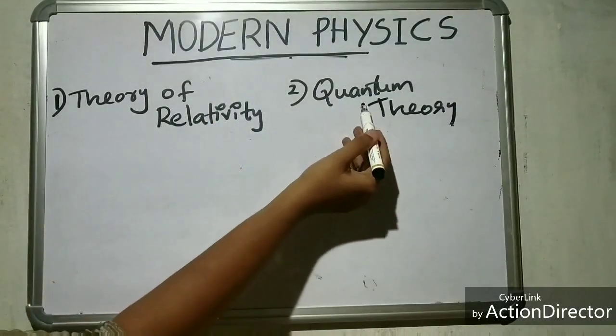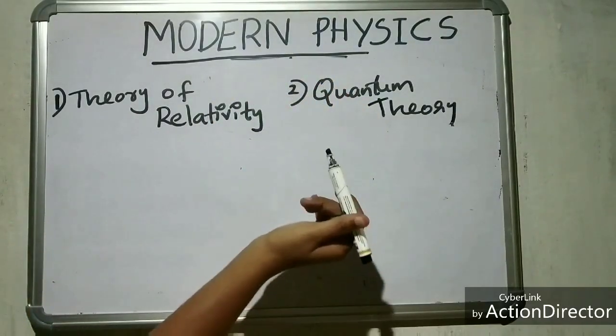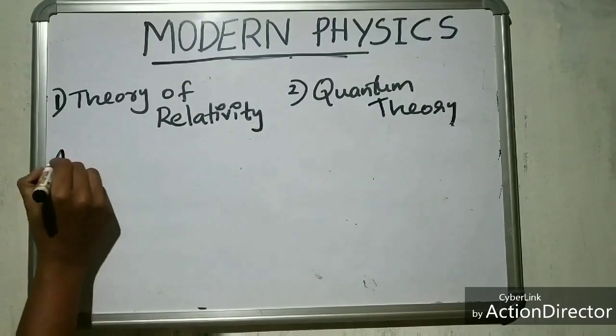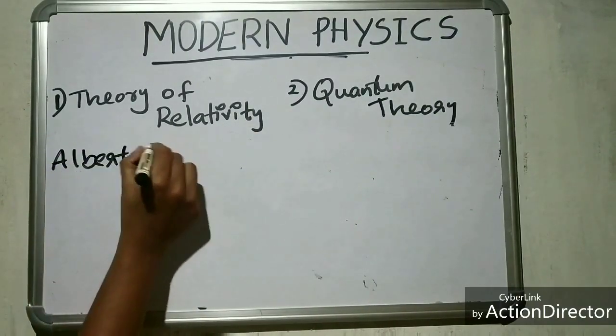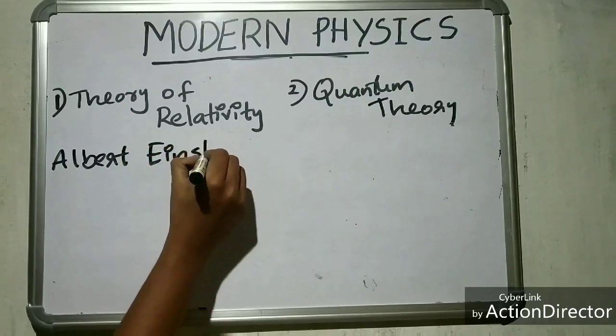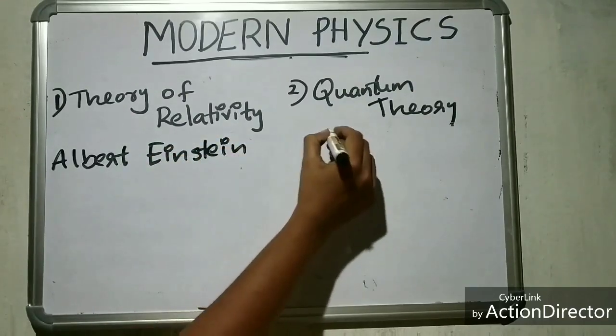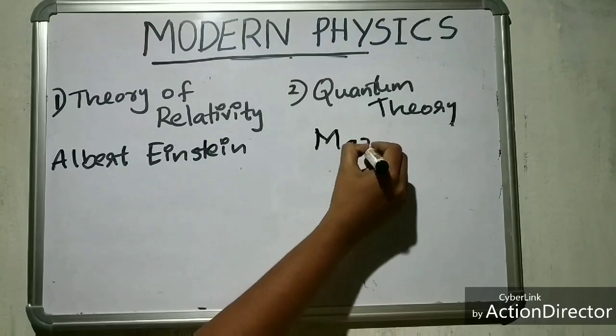Modern physics mainly concerned with the theory of relativity and the quantum mechanics. Theory of relativity discovered by Albert Einstein and the quantum theory discovered by Max Planck.